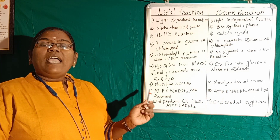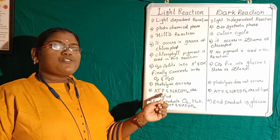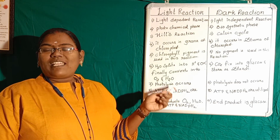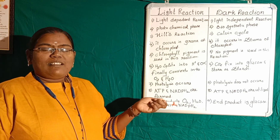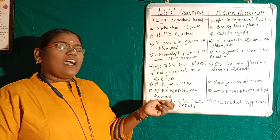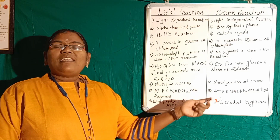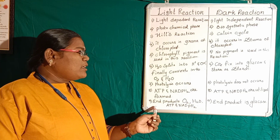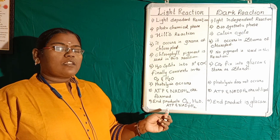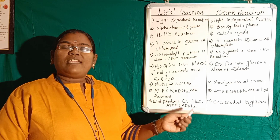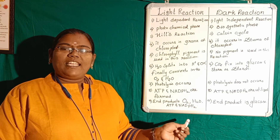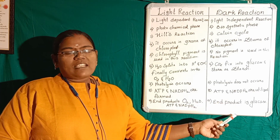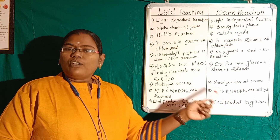ATP and NADPH2 are formed in the light reaction. These are also called assimilatory power because they store energy in organic components. In the dark reaction, ATP and NADPH2 are utilized. The end products of the light reaction are oxygen, water, ATP, and NADPH2. Whereas the end product of the dark reaction is glucose.